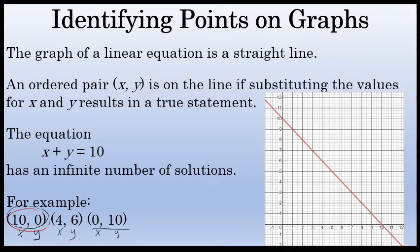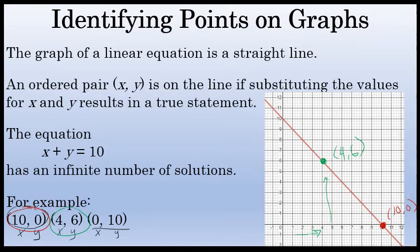The point (10, 0) is this point on the graph. The point (4, 6) — 4 to the right on the x-axis, 6 up on the y-axis — is also a point on this graph, one of the infinite number of points that exists on the graph of x plus y equals 10. Additionally, (0, 10) is a third point on the graph, right here. There's an infinite number of points on the graph of a linear equation, and any ordered pair (x, y) is on the line if substituting those values for x and y results in a true statement.